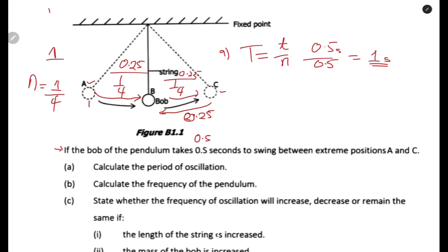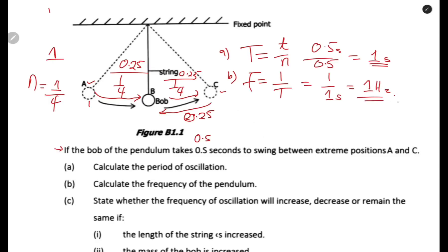For part (b), calculate the frequency of the pendulum. It is easy to calculate frequency if you already have the period, using the formula: frequency = 1 / period. Note that period and frequency are inversely proportional — the higher the frequency, the lower the period. So frequency = 1 / 1 second = 1 hertz.